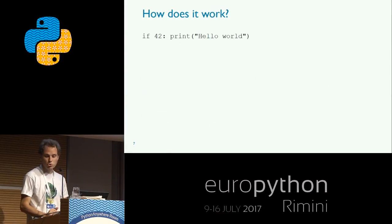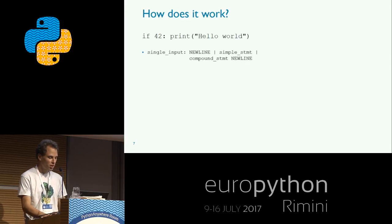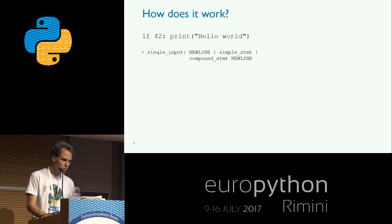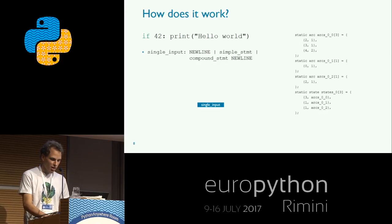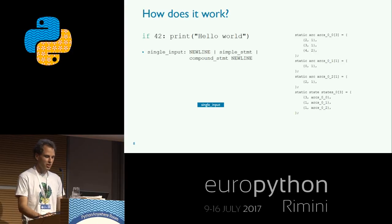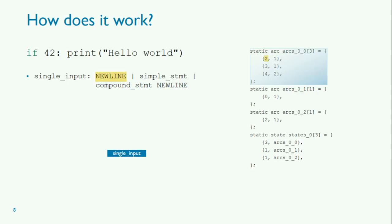I prepared a short demonstration of how this works for a very simple Python program. We parse it as a single input — that's the production we're parsing it according to. Our parse tree starts with a root node of single input. The DFA which parses single input is DFA number zero, and in the initial state (state zero), we have three arcs going out of it: arc label two corresponds to newline, the next arc to simple statement, and the third arc to compound statement.